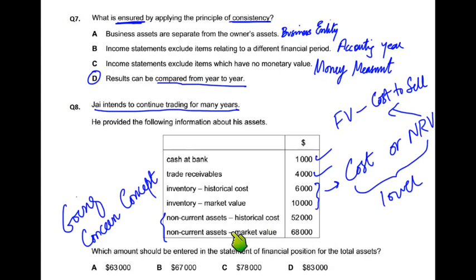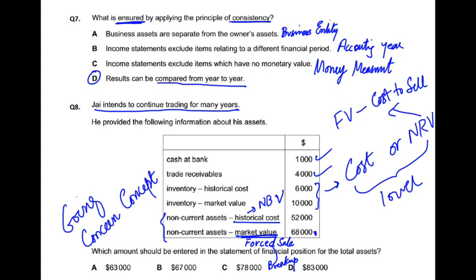اگر business چلتا رہے گا تو non-current asset کو historical cost پر رکھیں گے، یا net book value پر — یعنی cost میں سے depreciation minus کر کے۔ لیکن اگر business بند ہونے کے آثار ہوں تو asset کو market value پر لیں گے، جسے force sale value یا break-up basis بھی کہتے ہیں — یعنی business کو توڑ توڑ کے بیچنا: AC الگ، فرنیچر الگ، computer الگ۔ یہاں going concern valid ہے تو non-current asset کی 11,000 والی historical cost لیں گے، 68,000 market value نہیں۔